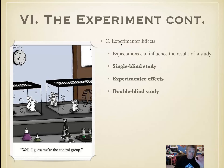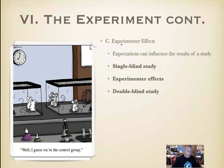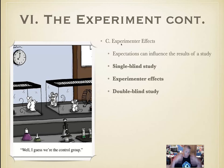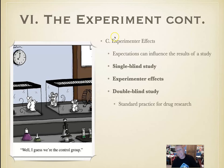A double blind study is where neither the participants nor the observers know which is which. The person pulling the strings is the only one who knows. So you might give one group caffeinated coffee and another decaffeinated, and nobody knows which they have — their expectations don't affect the experiment. The observer just gets 'room A' and 'room B' and observes behavior without their own bias coming into effect. This is standard practice for drug research, though it does have advantages and limitations.